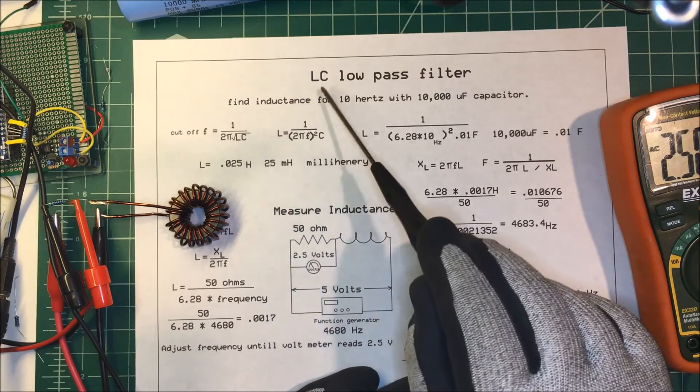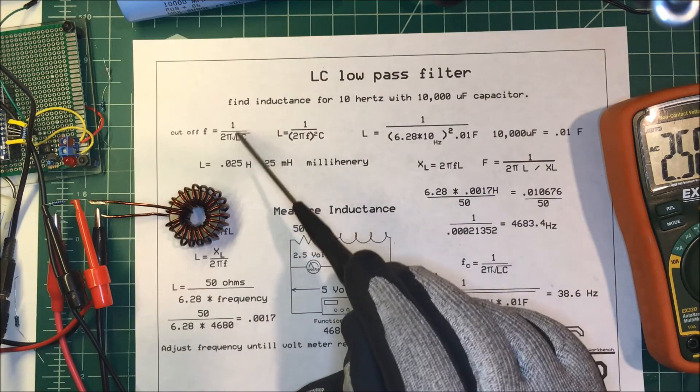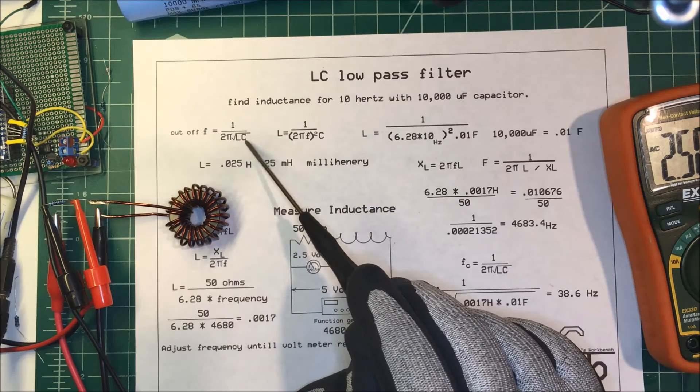The formula to find the frequency of an LC low-pass filter is: frequency equals 1 over 2π times the square root of inductance times capacitance.